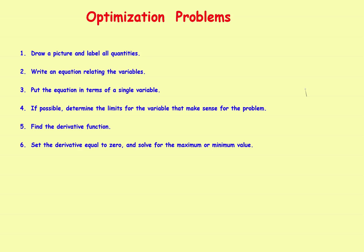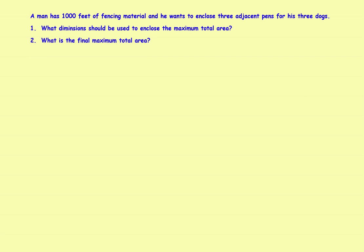So with those six steps, we'll run through them now as we do a sample problem. Here's our problem: a man has 1,000 feet of fencing material and wants to enclose three adjacent pens for his three dogs. The question is, what dimensions should be used to enclose the maximum total area?